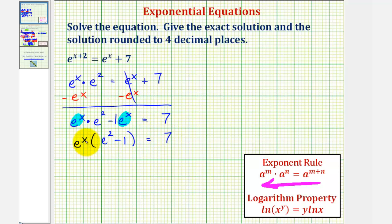Now to isolate the exponential part, we can divide both sides by e squared minus 1. Notice on the left side, this simplifies to 1. So we have e to the x equals 7 divided by e squared minus 1.